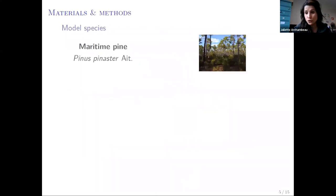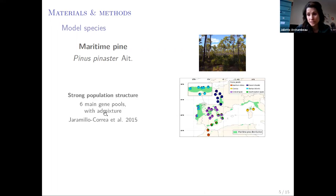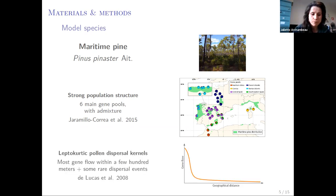So for that we use maritime pine as model species, a wind-pollinated long-leaf conifer with large ecological and economical importance in northern Africa and western Europe. It has a very strong population genetic structure with six main gene pools that have been described so far, and with some admixture suggesting gene flow among gene pools. Like for other wind-pollinated pines, pollen dispersal kernels in maritime pine are highly leptokurtic, which means that most gene flow occurs at very small spatial distances, but some rare dispersal events are likely to connect highly distant populations.